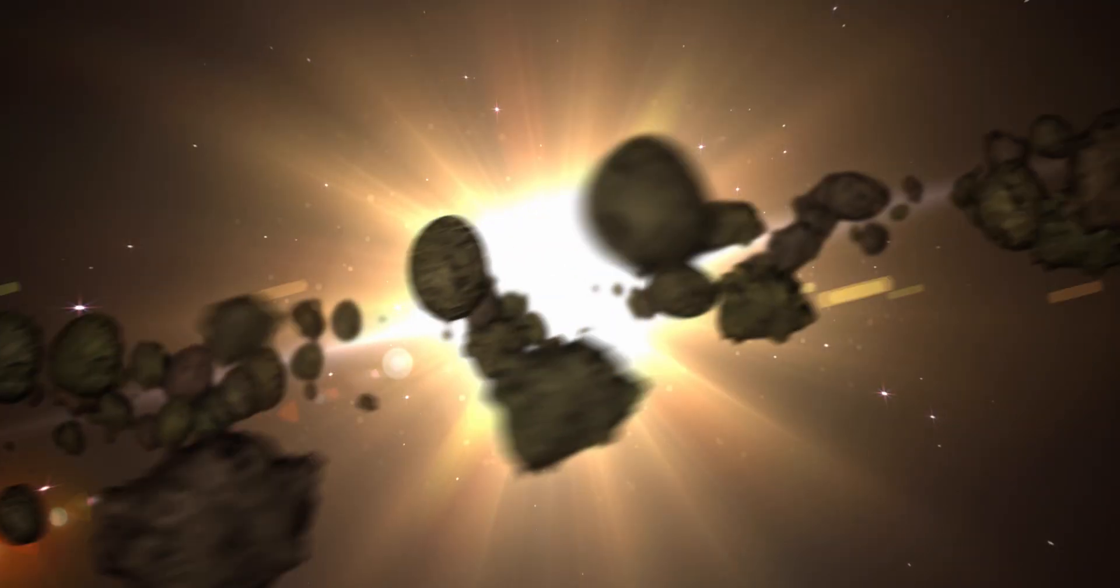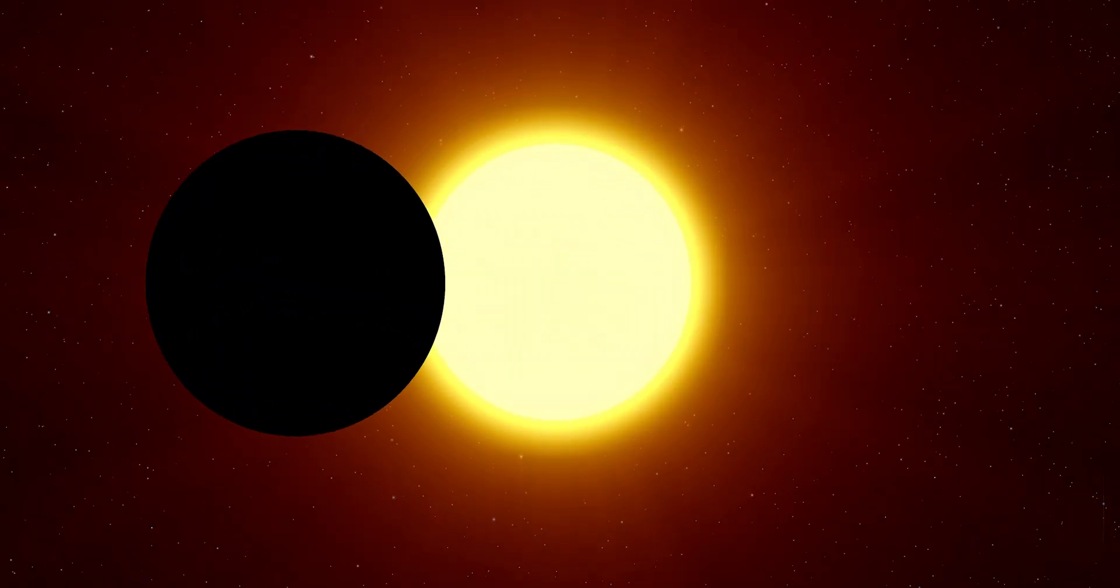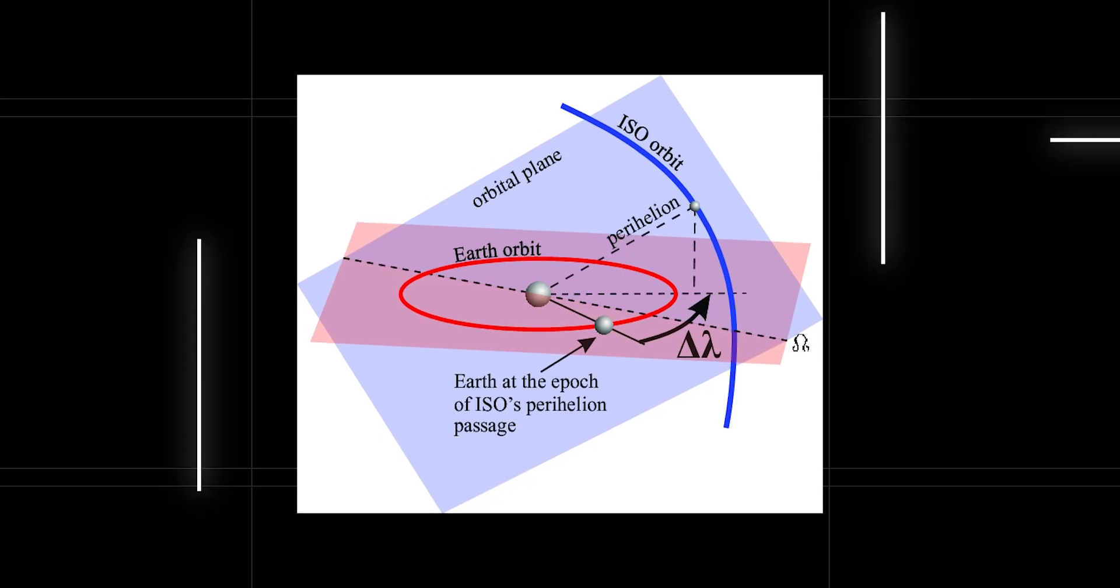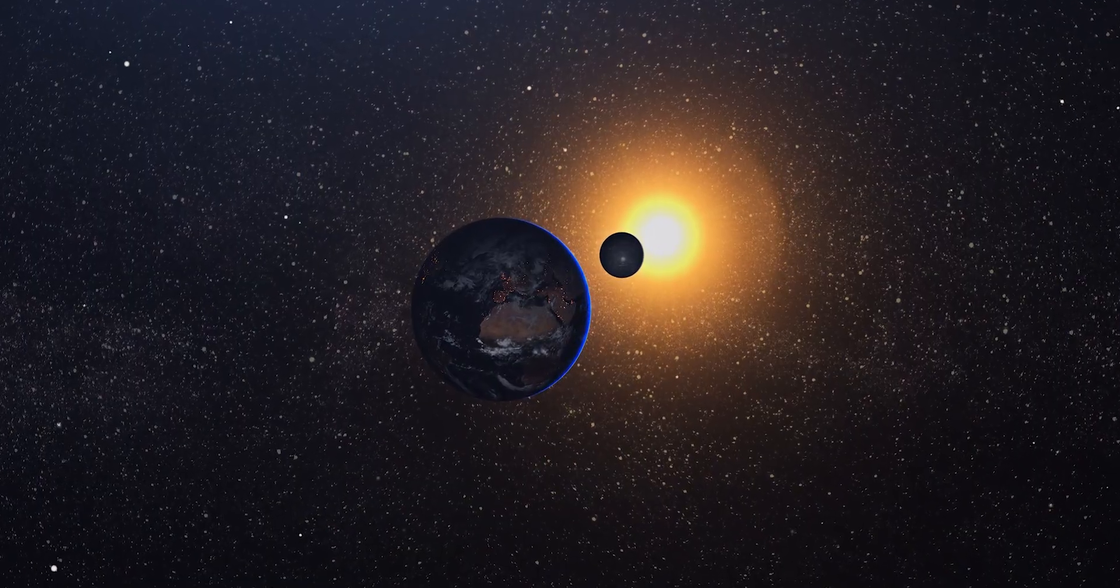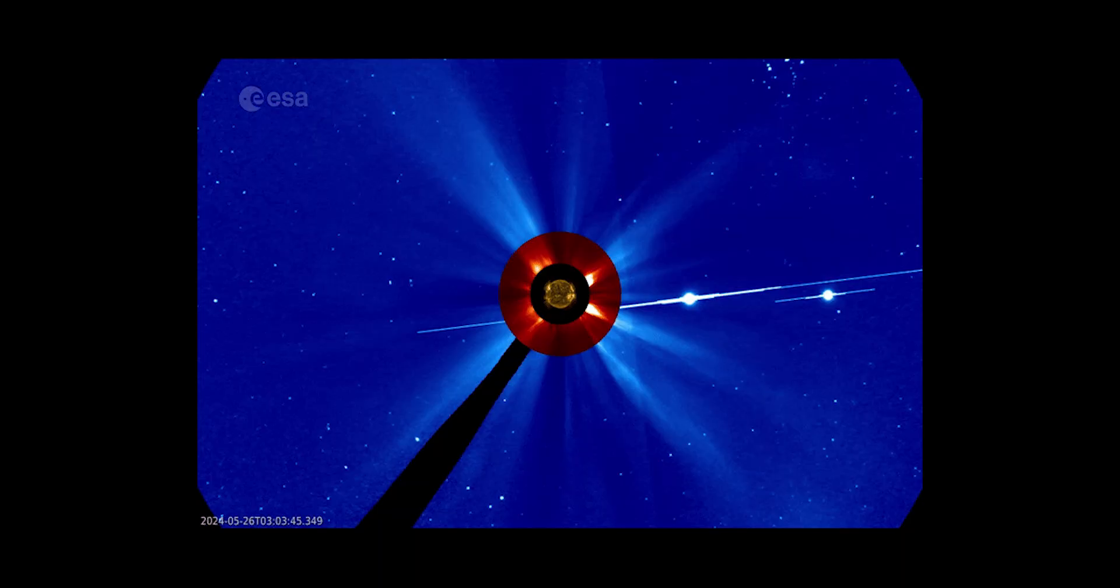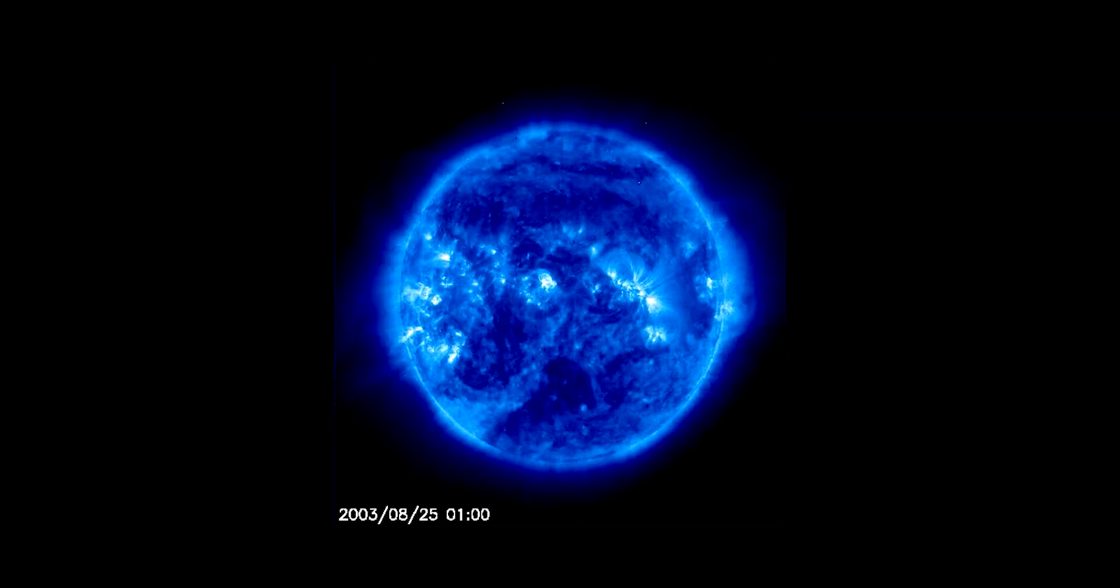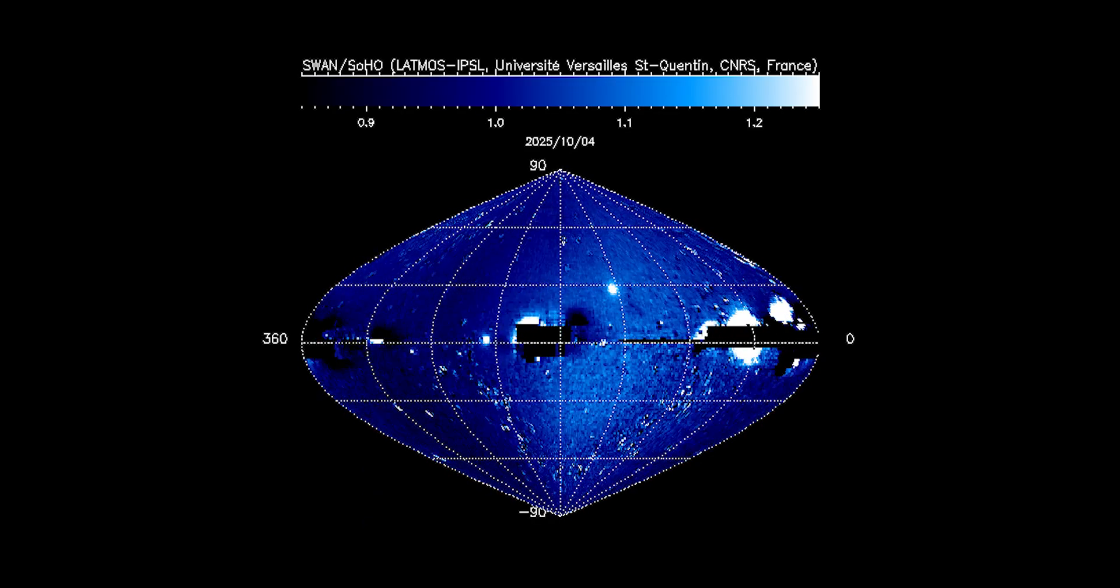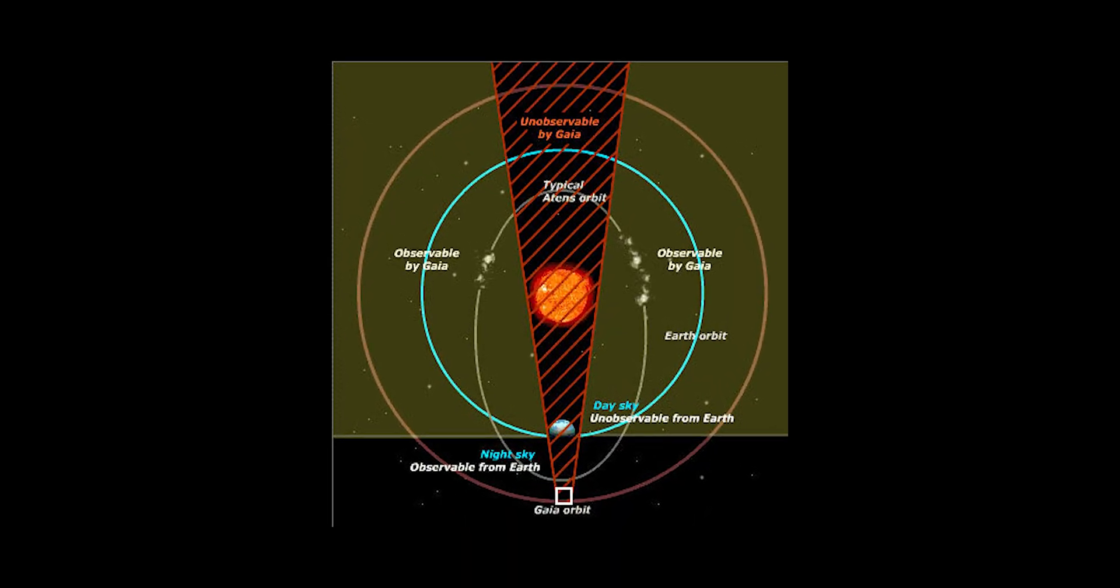Every day, as Earth rotates, this hidden region follows the Sun across the sky, creating a moving gap in our planetary surveillance. For astronomers, it's like a blindfold that renews itself every sunrise. Even the most advanced observatories can't overcome it. Twilight glare drowns faint reflections. Atmospheric scattering washes out contrast. And anything approaching from the Sun's direction, no matter how large, remains invisible until it emerges into darker skies. The physics is absolute.